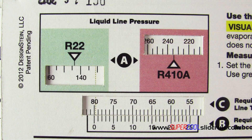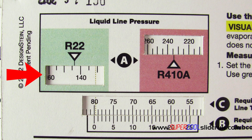To use this, we set the temperature to 80 as shown here directly over the zero. In the R22 window, we will note that the pressure is 144. And in the R410A window, we note the pressure is 235.